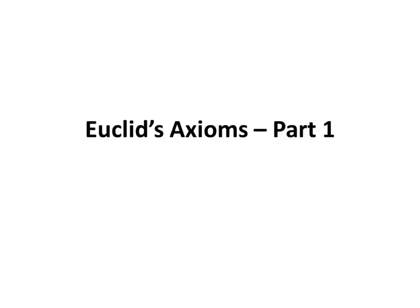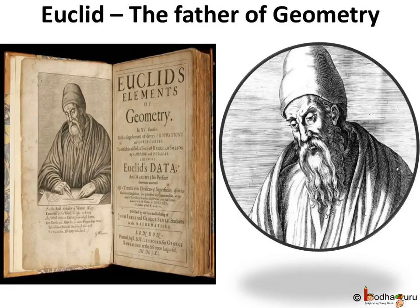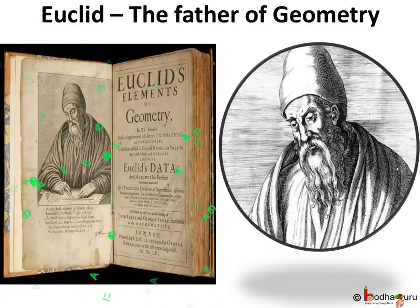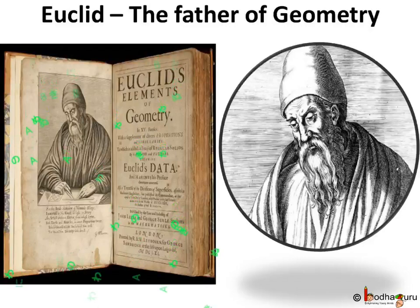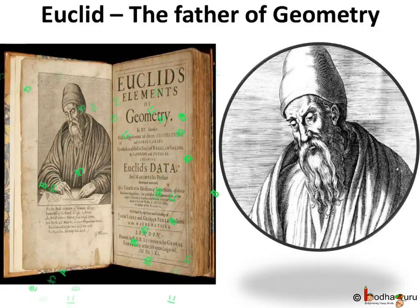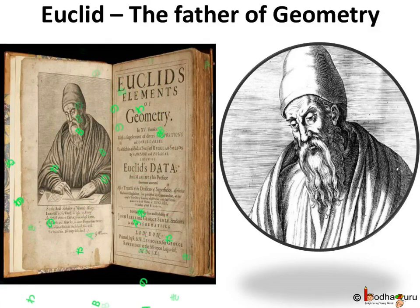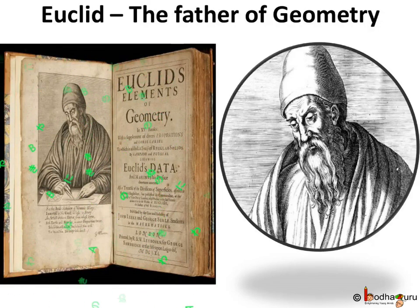Hello everyone. If someone was asked to name 10 greatest mathematicians of ancient time, then Euclid's name would be taken for sure. Euclid is known for his treatise Elements, and that treatise earned him the title The Father of Geometry.